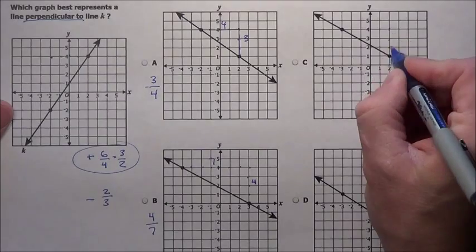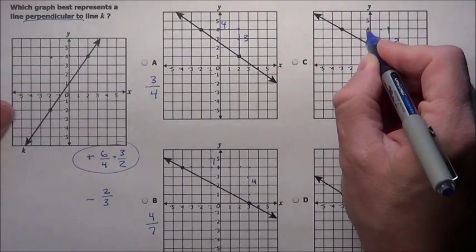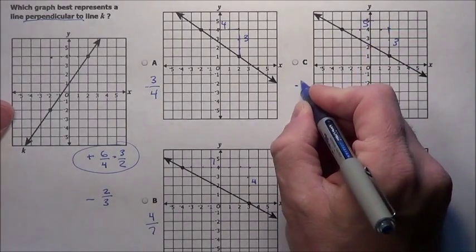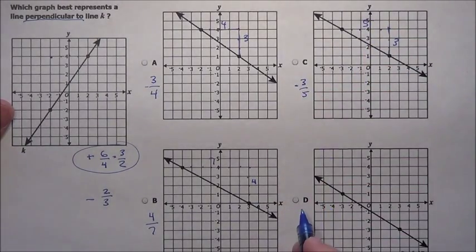1, 2, 3, rises 3, runs 1, 2, 3, 4, 5. So that's negative 3 fifths. Looks like it's going to be D.